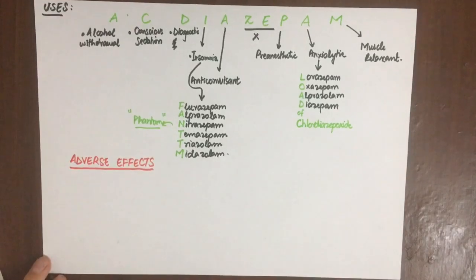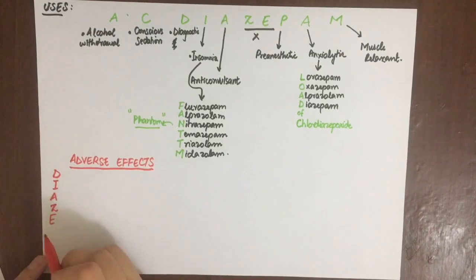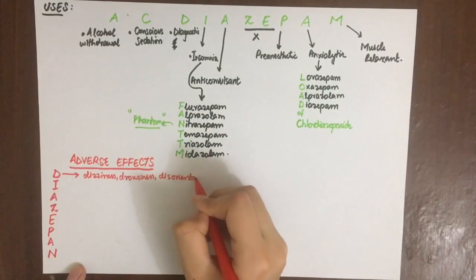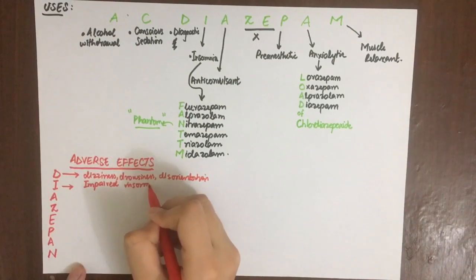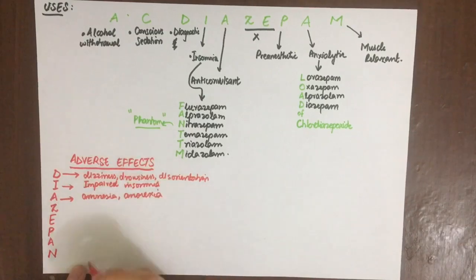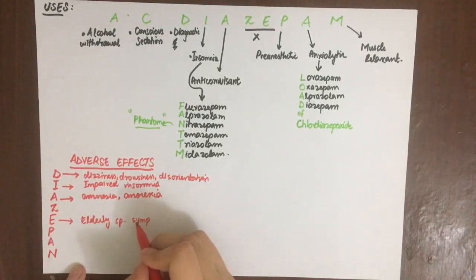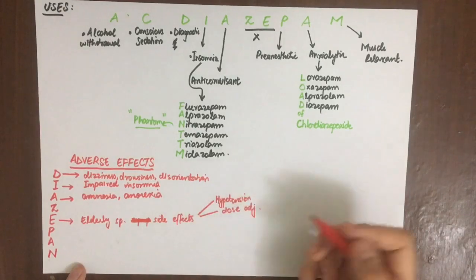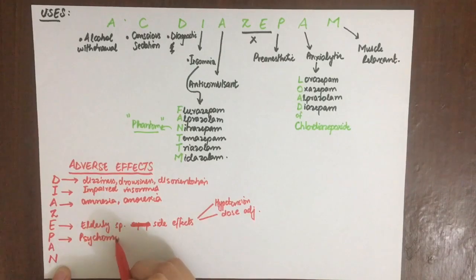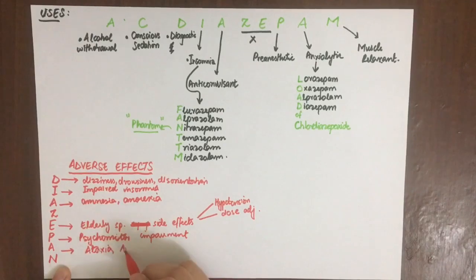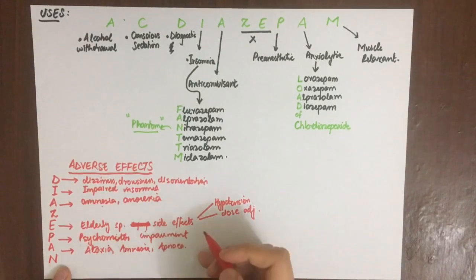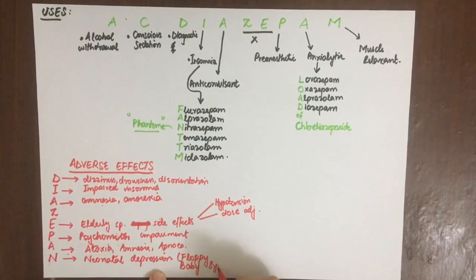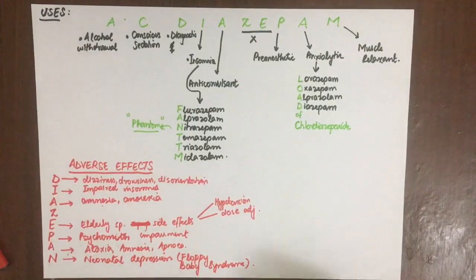The mnemonic for adverse effects is 'DIAZEPAN.' D is for dizziness, drowsiness, and disorientation. I is for impaired insomnia. A is for amnesia and anorexia. Z is placeholder. E is for elderly-specific symptoms: hypotension and dose adjustment due to ambulatory impairment. P is for psychomotor skill impairment. A is for ataxia, amnesia, and apnea. N is for neonatal distress, also called floppy baby syndrome, which can occur if the mother takes benzodiazepines as they pass into breast milk.